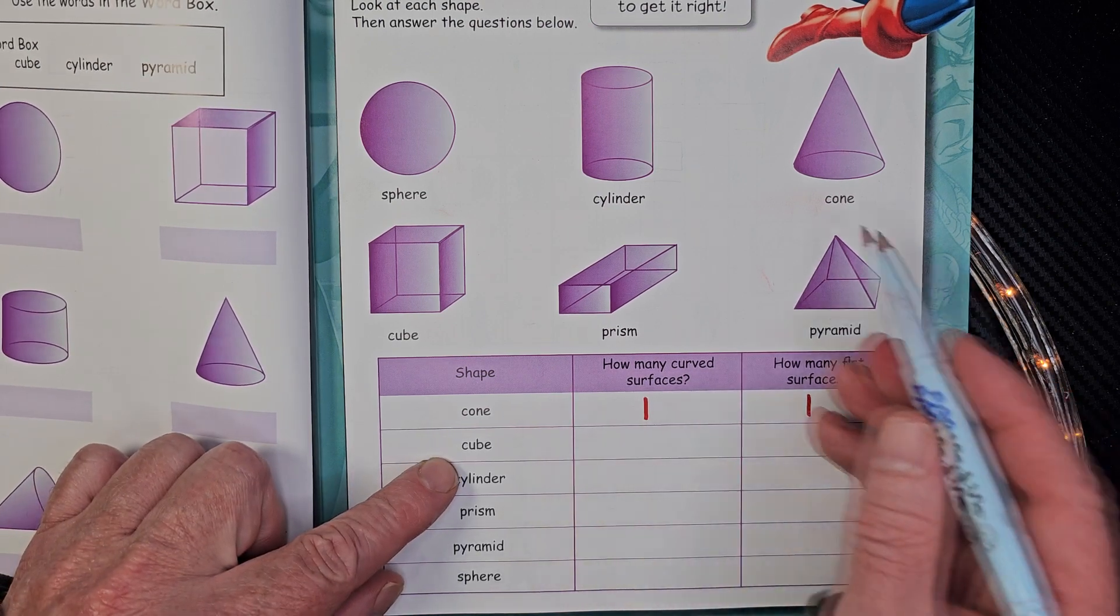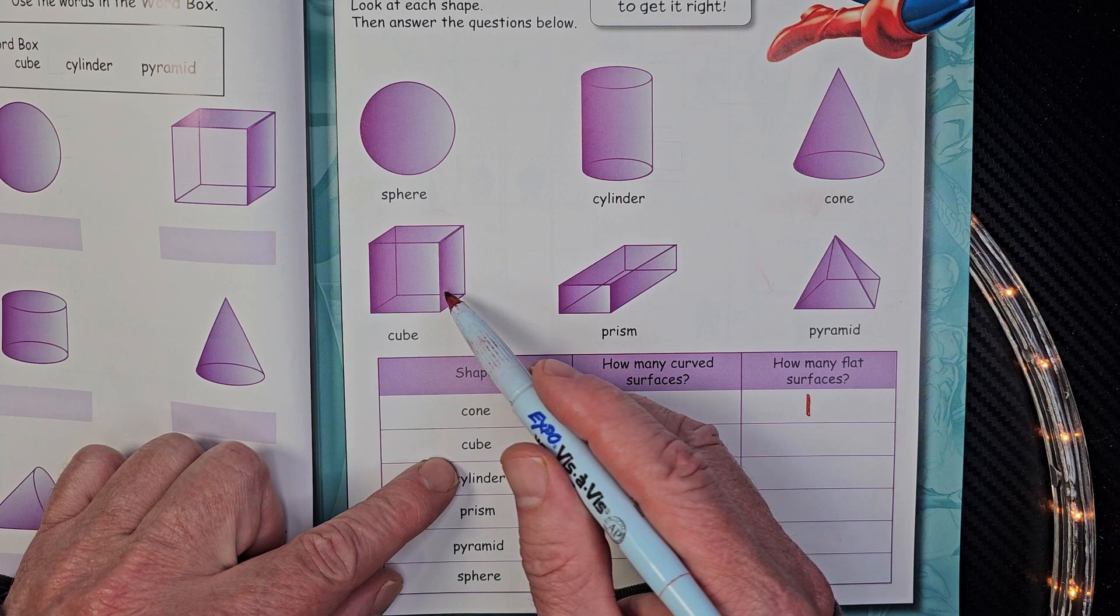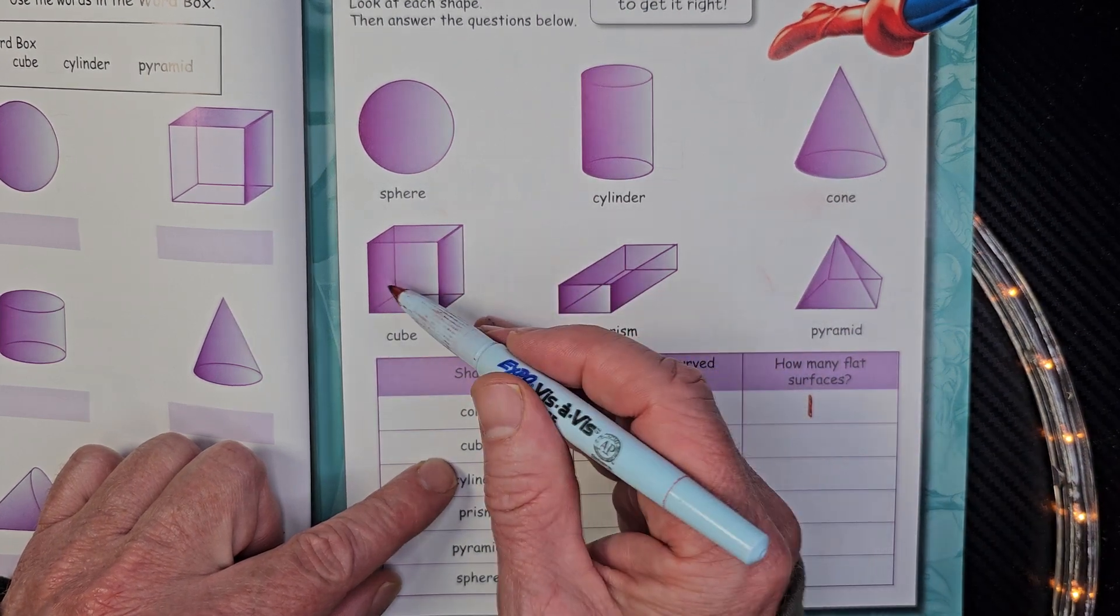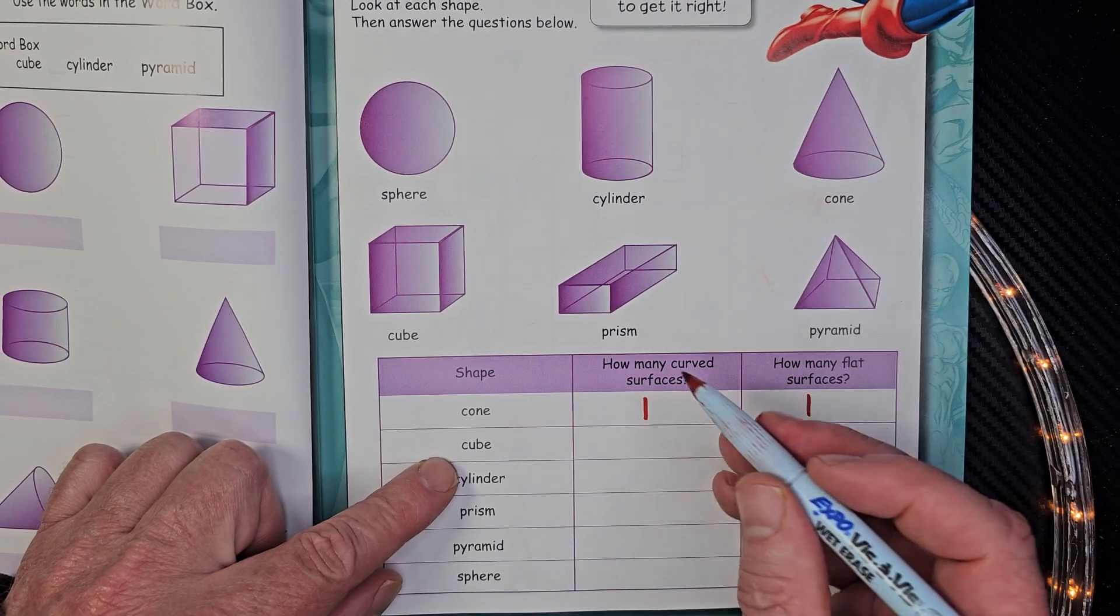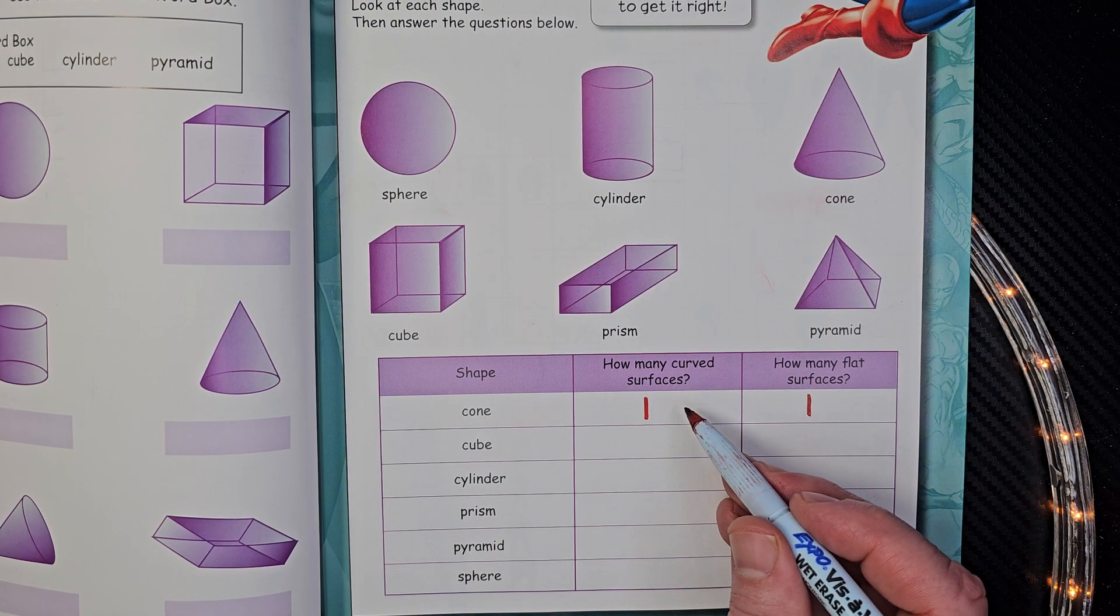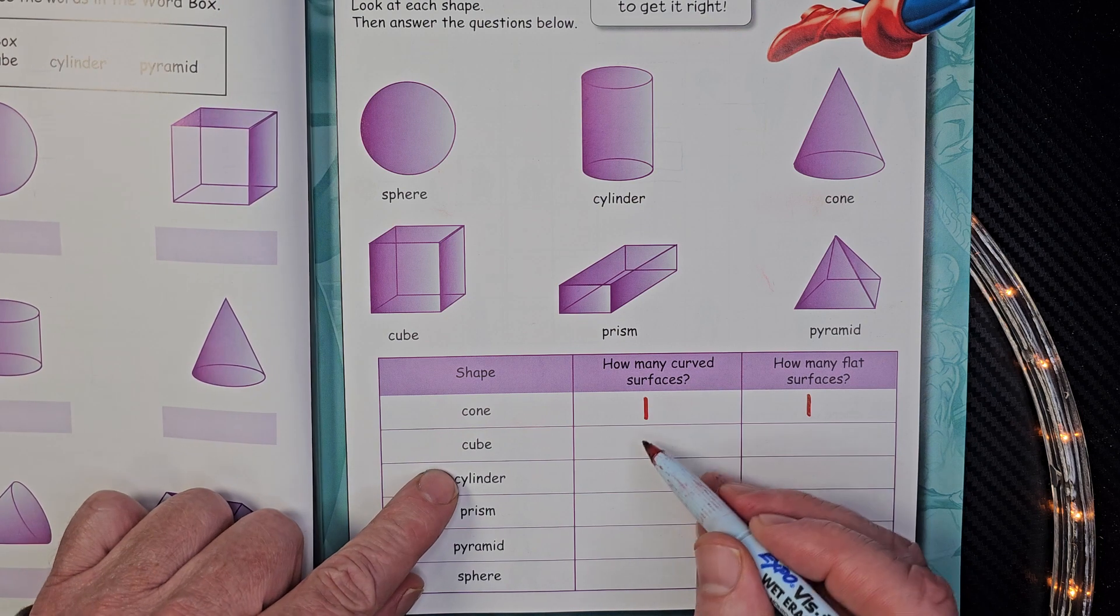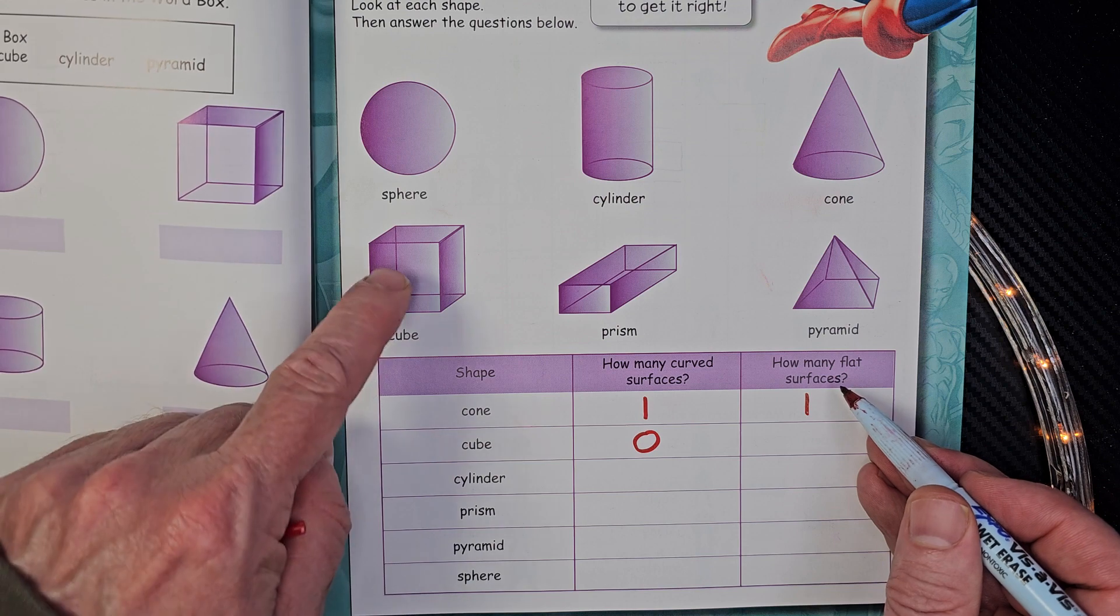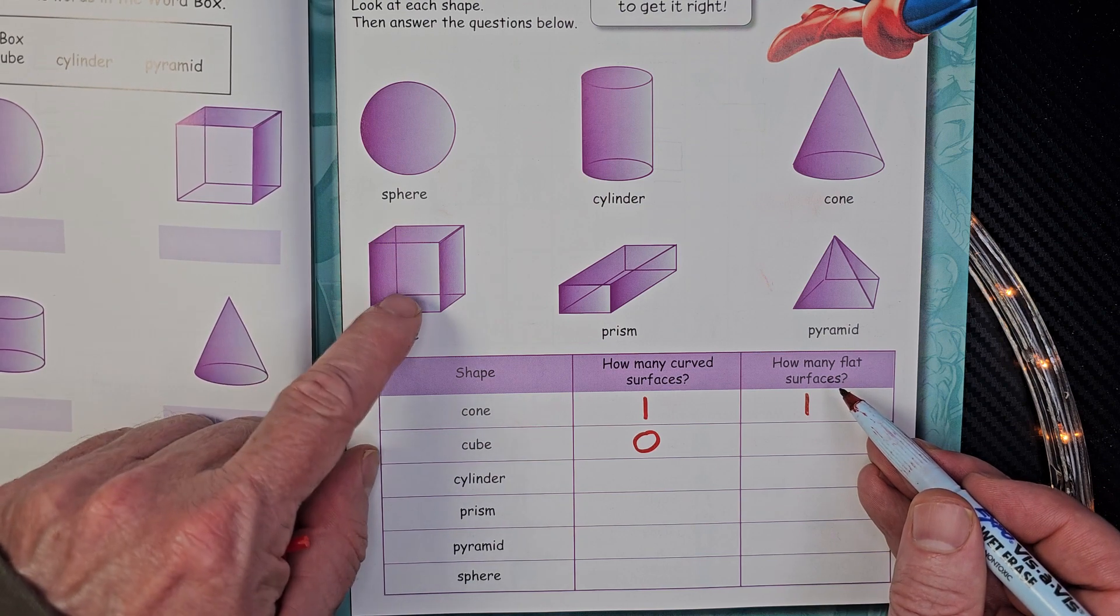Cube. Here's a cube. We have, how many sides on a cube? We have one, two, three, four, five, six. Six, six equal sides. So how many curved surfaces? There's no curved surfaces. Zero. How many flat surfaces? We just said that. One, two, three, four, five, six.